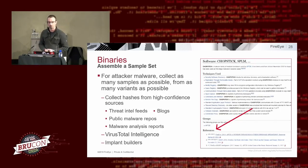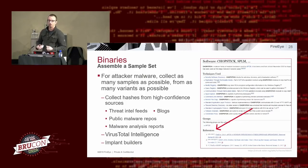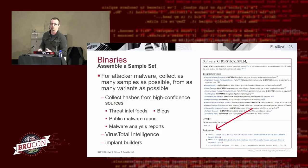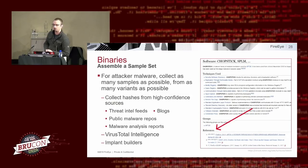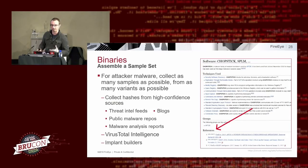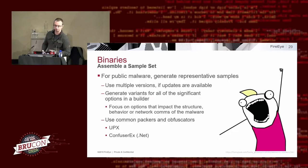Collect hashes from high-confidence sources: threat intel feeds, blogs, public malware repos, malware analysis reports. Reports include hashes not so you look for those hashes, but so you can find that malware and develop better detections. MITRE ATT&CK is very helpful for finding references to common malware families and getting to reports quickly. Also use VirusTotal and implant builders — it is possible to get builders for some malware. For public malware, generate representative samples using multiple versions, go back through git history, generate variants for significant build options that change structure, behavior, or network comms.